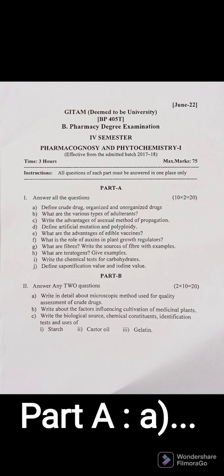Coming to Part 1 — the short answer questions, two marks each. The first question is: define crude drugs, organized and unorganized drugs. Crude drugs are natural drugs obtained from plant and animal sources, which are only processed for collection and drying. Organized crude drugs have cellular arrangement; microscopic study can be done for those drugs, like cinchona bark, cinnamon bark, and roots. Unorganized crude drugs do not have organized cellular arrangement and microscopic study is not possible for them, like aloe vera juice and extracts.